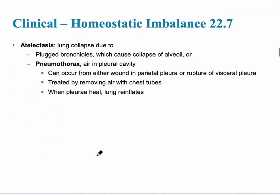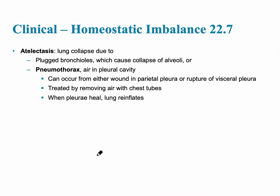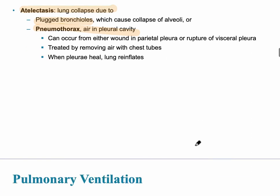Atelectasis is lung collapse, and it could be due to several different factors: a problem with bacteria, mucus in the bronchioles, or plugged bronchioles, leading to the collapse of the alveolus. When there's air in the pleural cavity, that is called a pneumothorax, and it could happen because of a wound — maybe a stab wound or a knife wound — that increases the pressure in the intrapleural cavity.